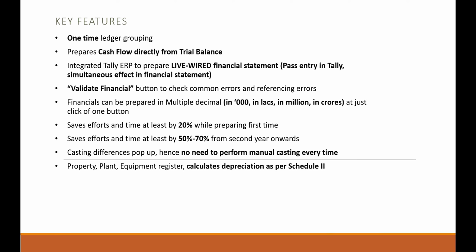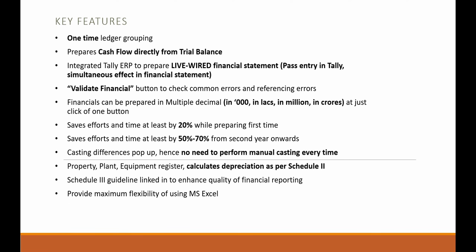A property, plant and equipment register is built in, and depreciation is going to be calculated as per Schedule 2. Schedule 3 guidelines are linked in. The tool provides maximum flexibility of Excel, as we have used Excel as the platform to prepare this tool. A ratio analysis sheet is built in, and a print button is also built in.